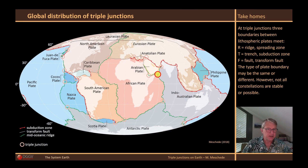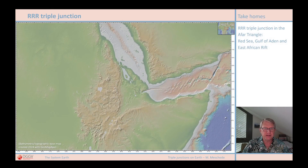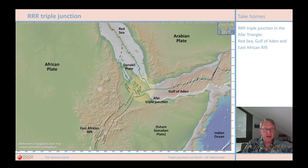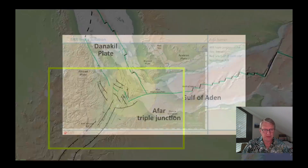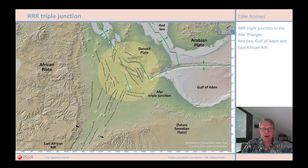We will have a look at another RRR triple junction, this time in the Afar Triangle. Here we see the Red Sea and the Gulf of Aden, and where they meet, the Afar Triangle, which to the south merges into the East African rift system. At this triple junction, the Arabian, African, and Somalian plates meet. The Somalian plate is, however, not yet completely separated from the African plate, and we can therefore define it as a future plate. In this close-up of the Afar Triangle, we can see that the situation is far more complicated than it first appears from a distant view. The East African rift system is the third diverging plate boundary meeting at the triple junction, but a mid-oceanic ridge has not yet been developed here. The graben structures meet very young spreading zones where new oceanic crust is already formed, but which are not yet clearly defined.